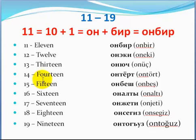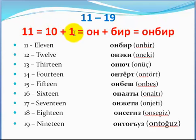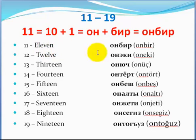The next section covers 11 to 19. The system of numbers in Balkar has a very logical structure, so once you get to know the principle of it, you'll easily count. For example, 11 equals 10 plus 1. So we have 11, 11.